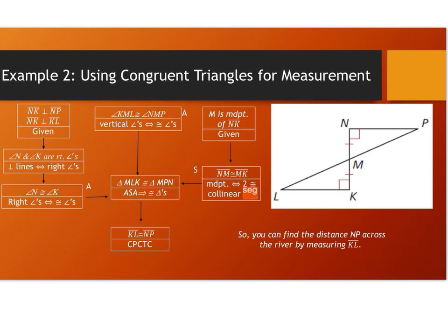Let's take a look at this proof. Always start by sketching and identifying your markings based on givens. We're given that NK is perpendicular to NP and NK is perpendicular to KL. You can include these two statements together in the same box with the reason 'given.' That leads us to conclude that angle N and angle K are right angles, because perpendicular lines imply right angles.